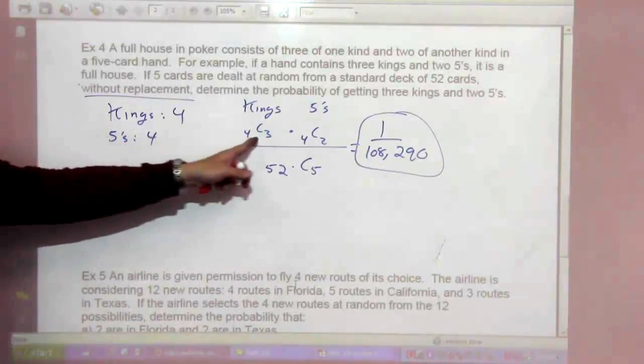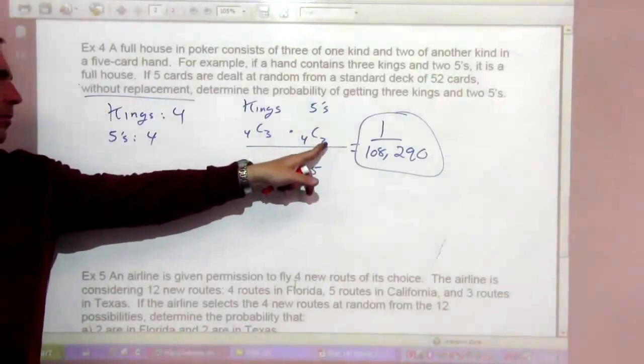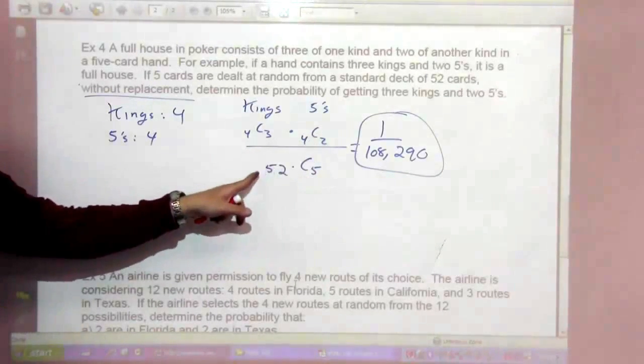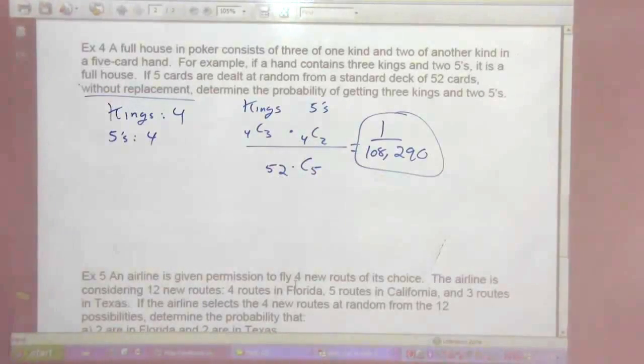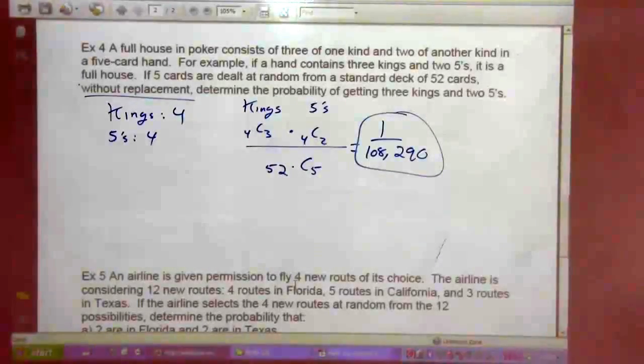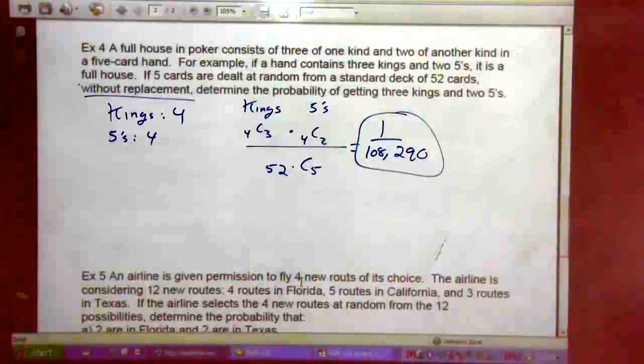So it's 4 kings, so it's 4 choose 3 because we're having 3 kings and 2 fives, so 4 choose 2. Total number of cards choose 5. Here are our last questions. Let's go ahead and pause if we need some more time.